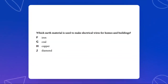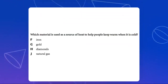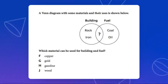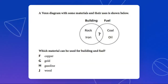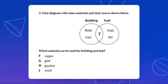Which Earth's material is used to make electrical wires for homes and buildings — iron, coal, copper, or diamond? Please write your answer in your UOI copybook. Which material is used as a source of heat, especially now that winter is coming, to help people keep warm when it's cold — iron, gold, diamond, or natural gas? Which material can be used for buildings and fuel — copper, gold, gasoline, or wood?